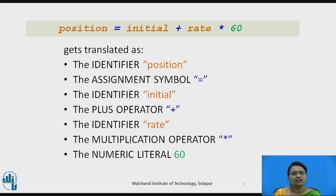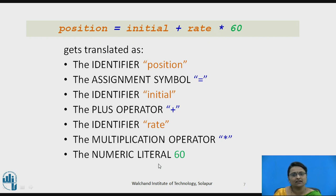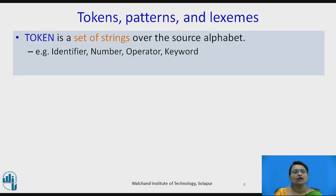In detail: position is an identifier, equals is an assignment symbol, initial is an identifier, plus is a plus operator specifically doing addition, rate is an identifier, multiplication is a multiplication operator, and finally 60 is a numeric literal — also called a numeric constant.